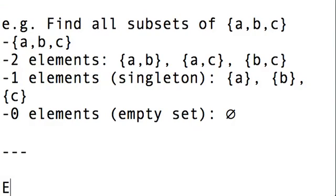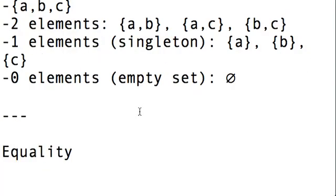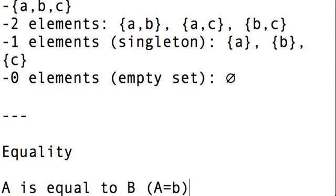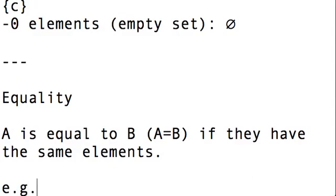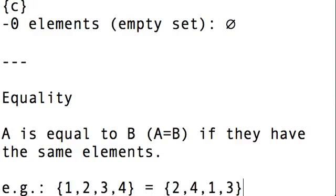Now, the next relation I would like to talk about is equality, and equality really means what you would expect it to do. A set A is equal to B, and of course we write that as A equals B, if they have the same elements. So as a simple example, {1, 2, 3, 4} is equal to {2, 4, 1, 3}.